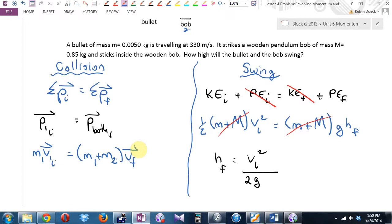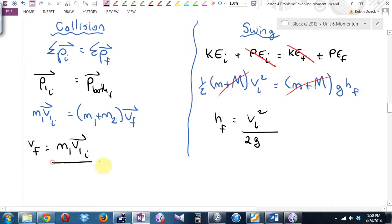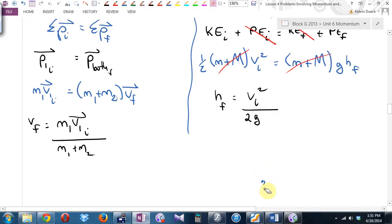Momentum 1 is M1 V1 initial, and momentum both is M1 plus M2 V final. Even though this question said find height, I'm going to spend a lot of time finding the final speed after the collision. Speaking of, how would I get the V final by itself? Let's get an answer and then just stick the answer over here. Let's not do this all algebraically.